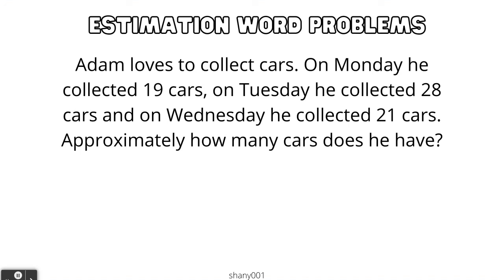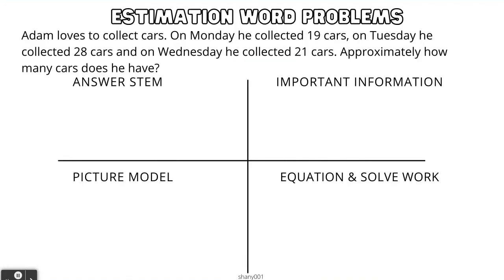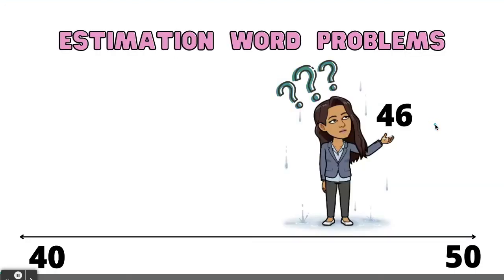Adam loves to collect cars. On Monday he collected 19 cars, on Tuesday he collected 28 cars, and on Wednesday he collected 21 cars. Approximately how many cars does he have? Use a problem-solving model to solve this problem. You may use the three different strategies: place value, rounding hill, or an open number line. I hope you enjoyed our video on estimation word problems. Thank you and have a great day.